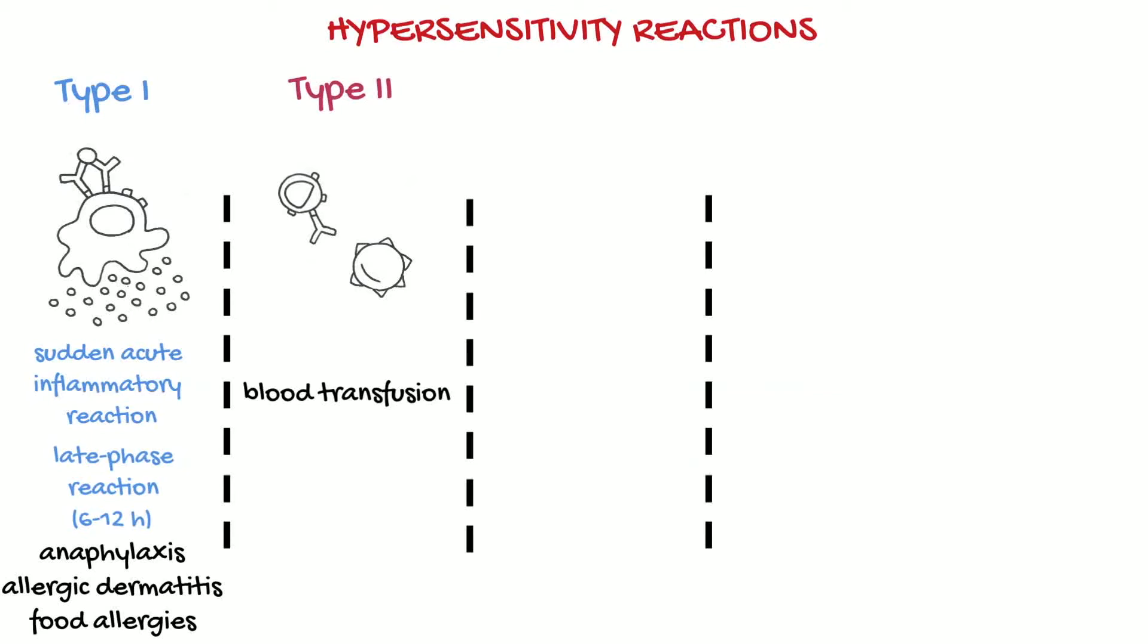These antigens present on red blood cells are called blood group antigens. So what happens with the transfusion? If the donor red cells are identical to those of the recipient, nothing will happen.